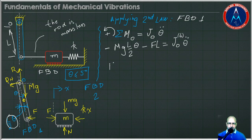We have a first expression. Let's isolate F. F is equal to minus J_O times double dot theta over L minus M_g times theta over 2 divided by L. In this case, we have a first expression.